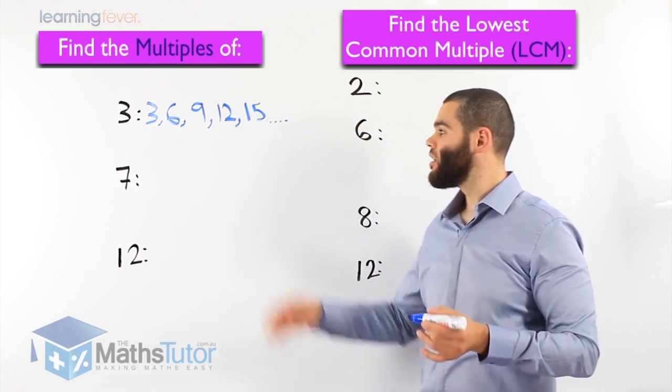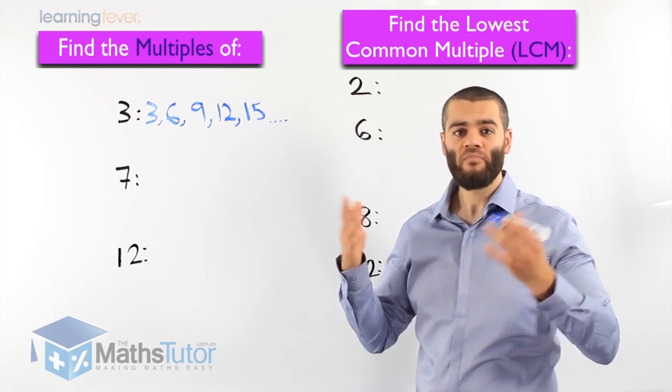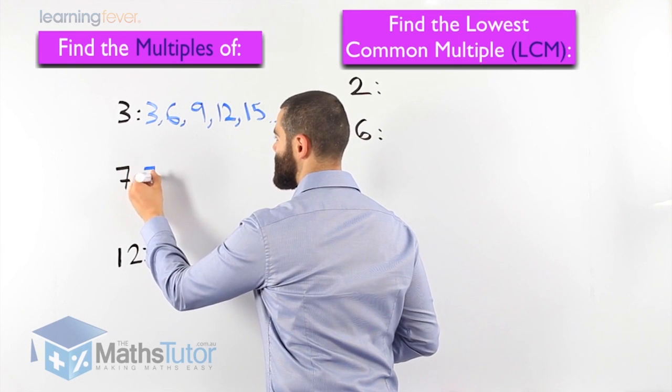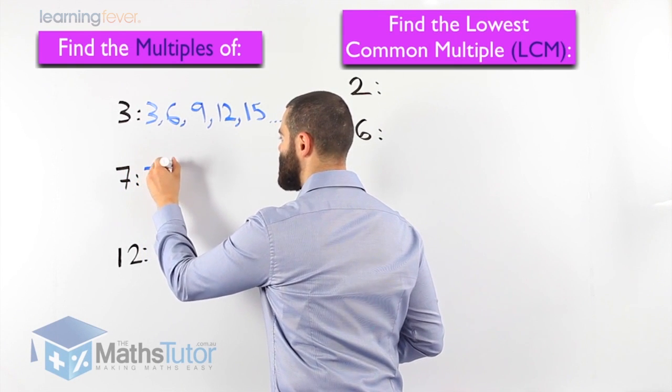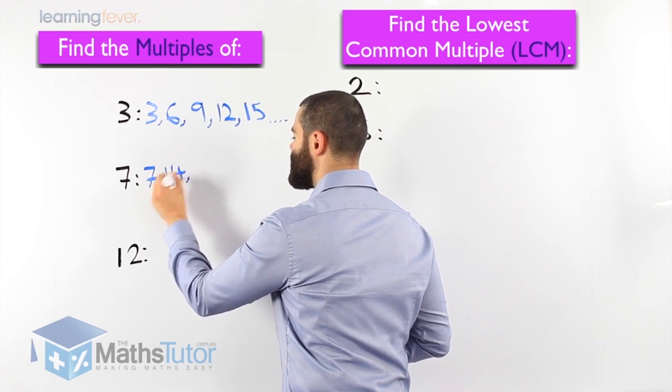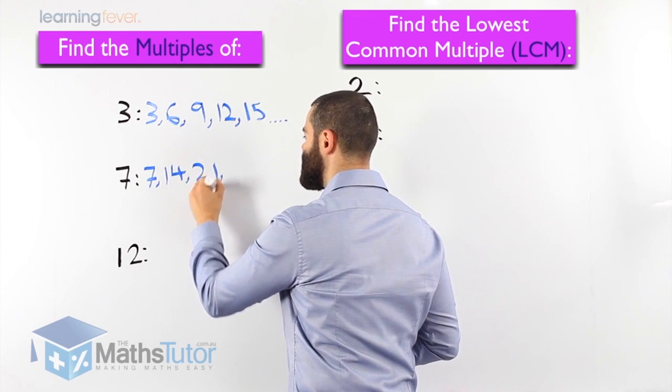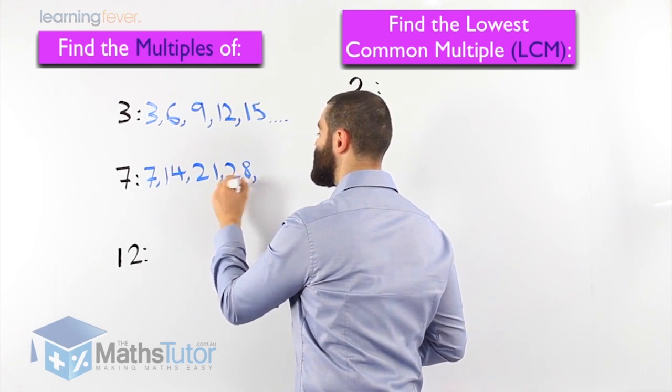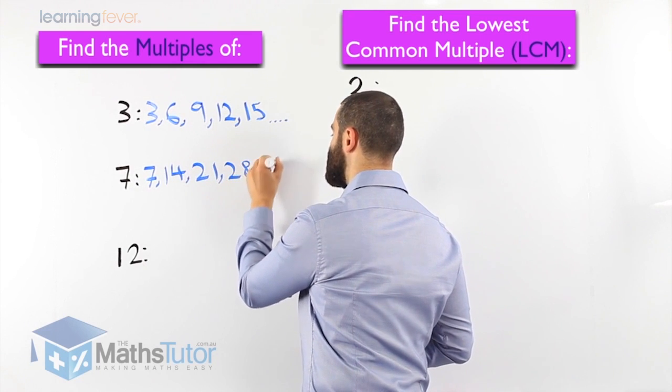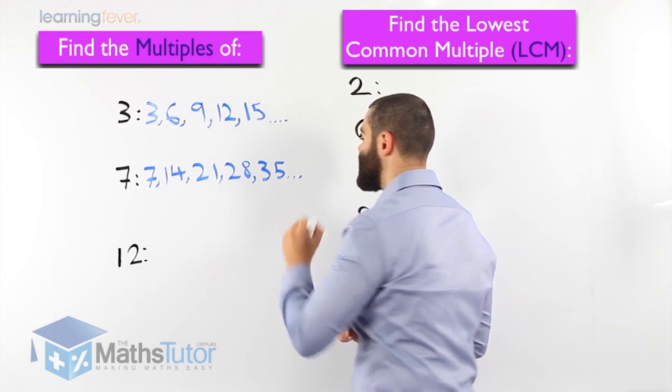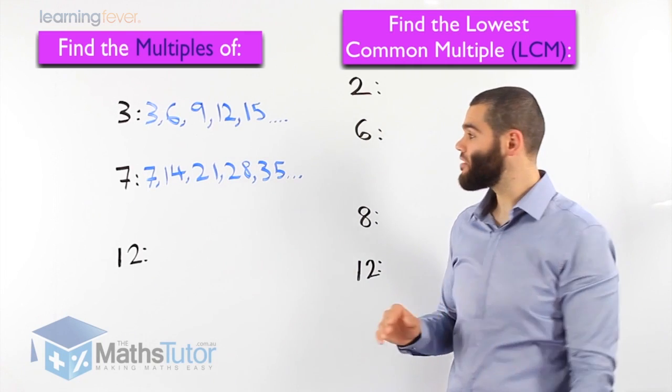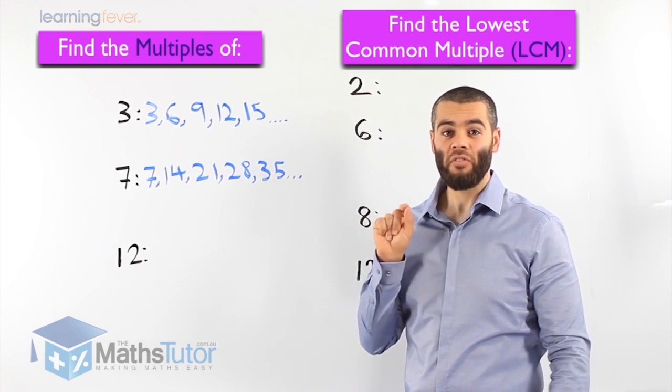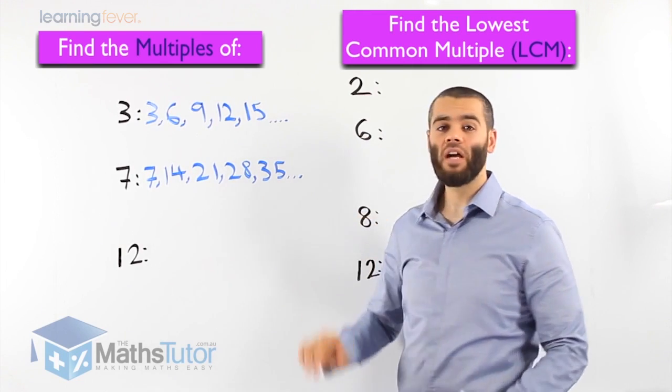The multiples of 7, the times tables of 7. 7 times 1 is 7, 7 times 2 is 14, 7 times 3 is 21, 7 times 4 is 28, 7 times 5 is 35, and we can keep going. As you can see, what do I need to know? My times tables. If I'm faster at my times tables, these will become a breeze.